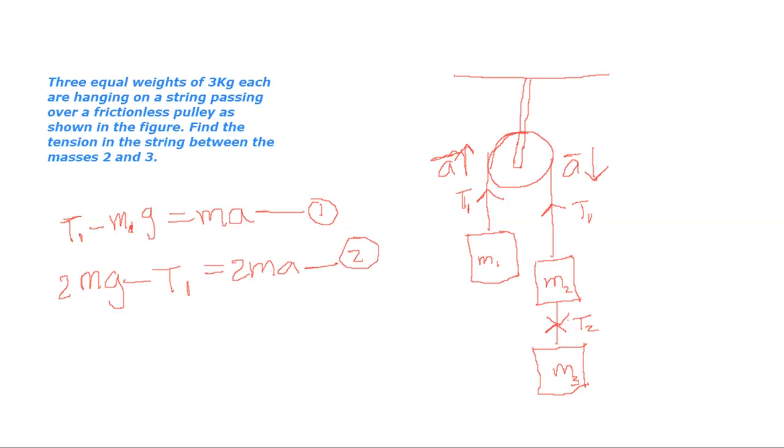Now, we need to find the free body diagram and equation of motion for M3. In case of M3, M3 is moving downwards, so we have Mg and the tension T2 between M3 and M2. T2 is acting opposite to the motion of the system. So Mg minus T2 equals MA. That is our third equation.